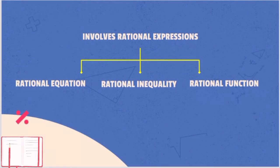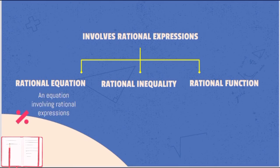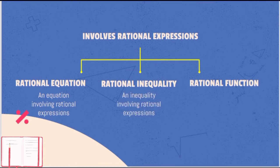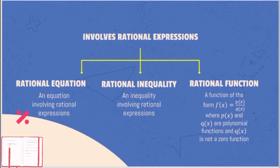The following involve rational expressions: rational equation, rational inequality, and rational function. A rational equation is an equation involving rational expressions. A rational inequality is an inequality involving rational expressions. And a rational function, as you already know from our previous lesson, is a function of the form f(x) = p(x) over q(x), where p(x) and q(x) are polynomial functions, and q(x) is not a zero function.